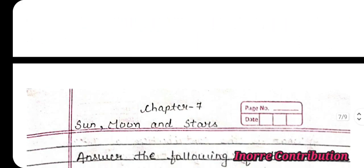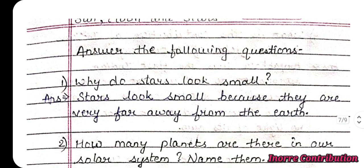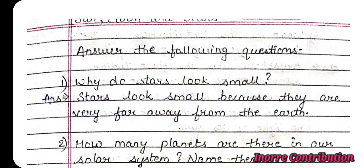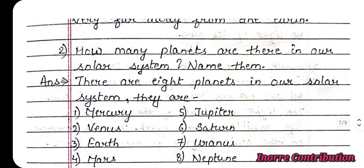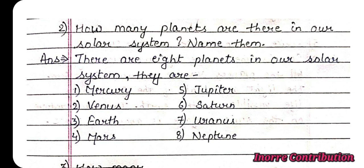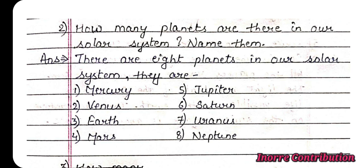Answer the following questions. First, why do stars look small? Answer: Stars look small because they are very far away from the Earth. Second, how many planets are there in our solar system? Name them. Answer: There are eight planets in our solar system. They are Mercury, Venus, Earth, Mars, Jupiter, Saturn, Uranus, Neptune.